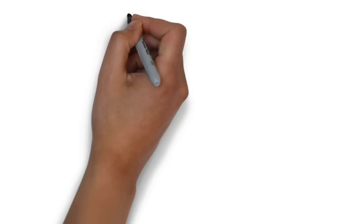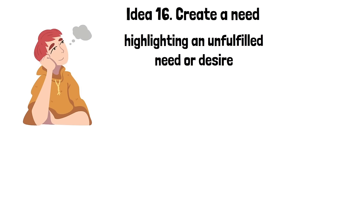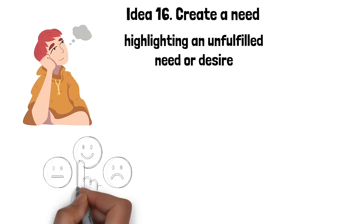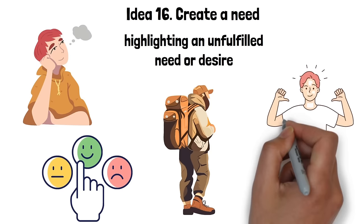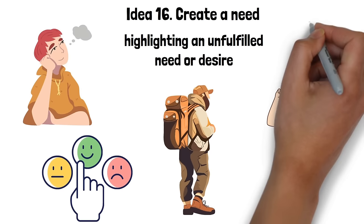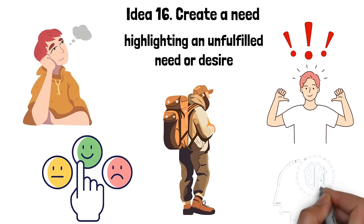Idea 16. Create a need. Creating a need in someone's mind is a potent aspect of seduction. It revolves around identifying or even subtly highlighting an unfulfilled need or desire in the other person, then positioning oneself as the solution. This need could be emotional, such as the need for validation, companionship, or excitement. It could also be psychological, such as the need for adventure or novelty. By fulfilling or promising to fulfill this need, you become a person of great significance in their life. The key here is to make your presence feel essential, so much so that your absence creates a void. This strategy is powerful because it taps into the basic human instinct to seek fulfillment of our needs and desires.